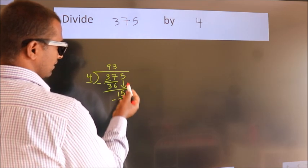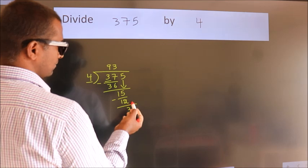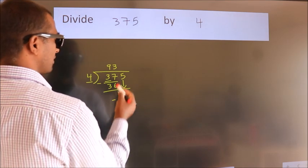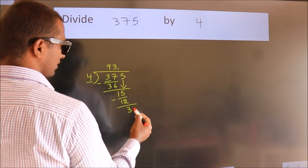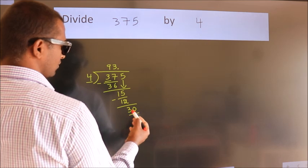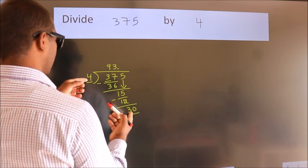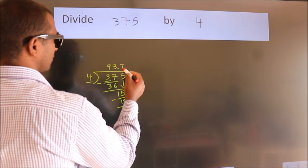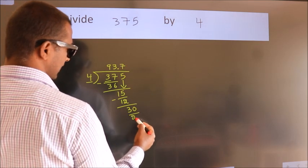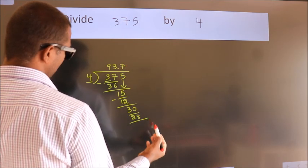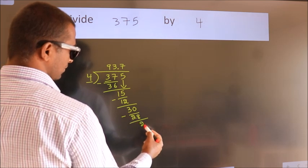After this, no more numbers to bring down. So what we do is put a dot and take 0. So 30. A number close to 30 in the 4 table is 4 times 7 equals 28. Now we subtract. We get 2.